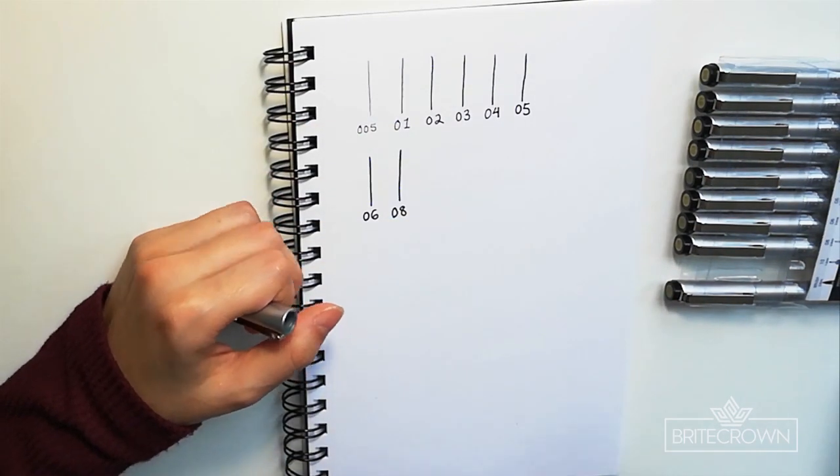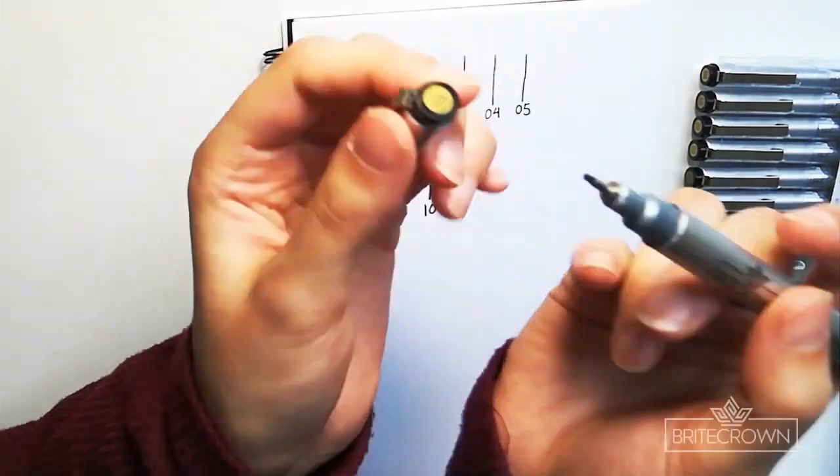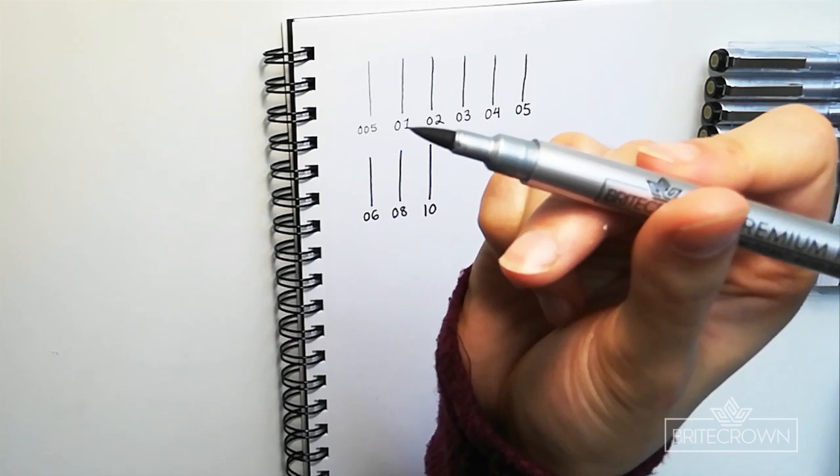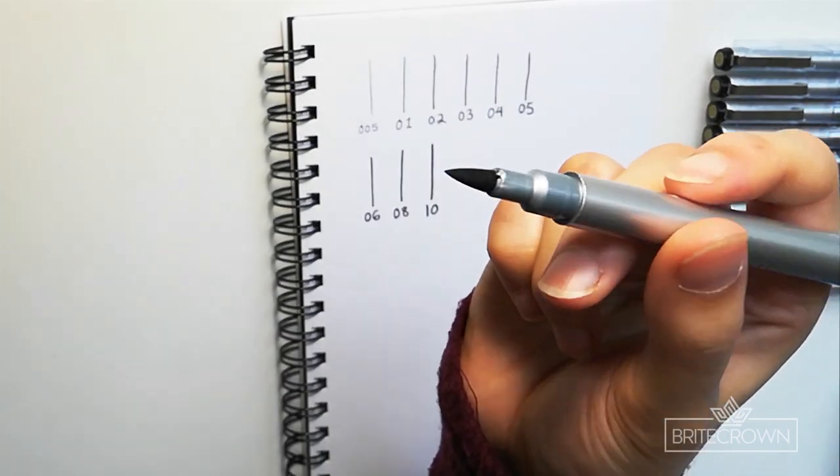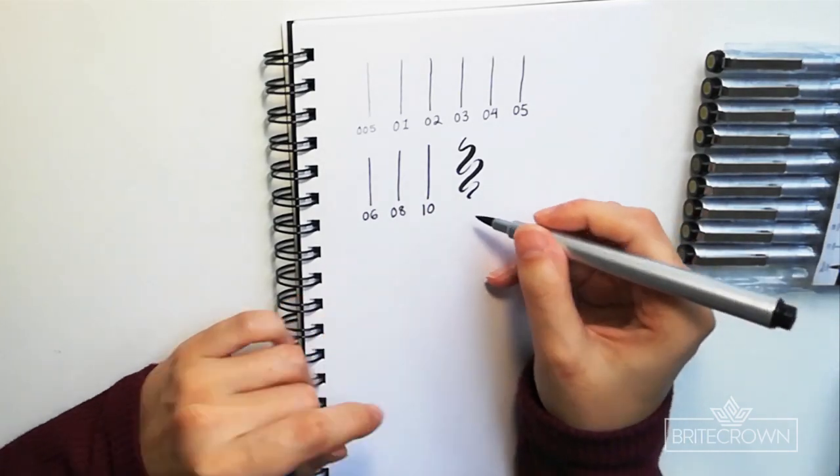And the thickest straight nib is 1 millimeter size and then it also comes with a brush tip which is very useful and versatile. And that brush tip is a 2.5 millimeter brush.